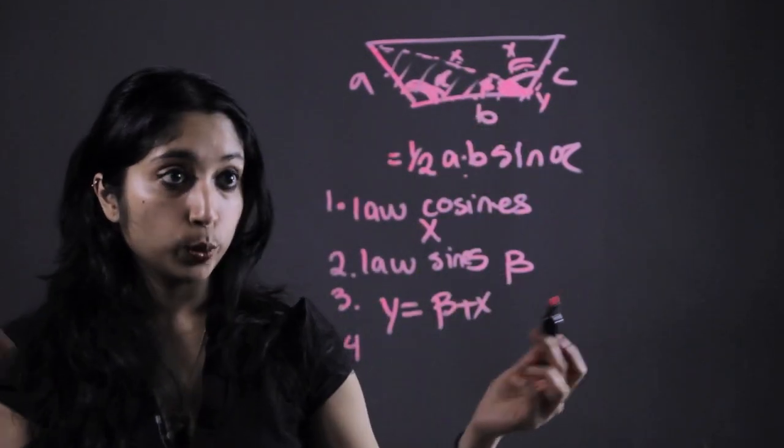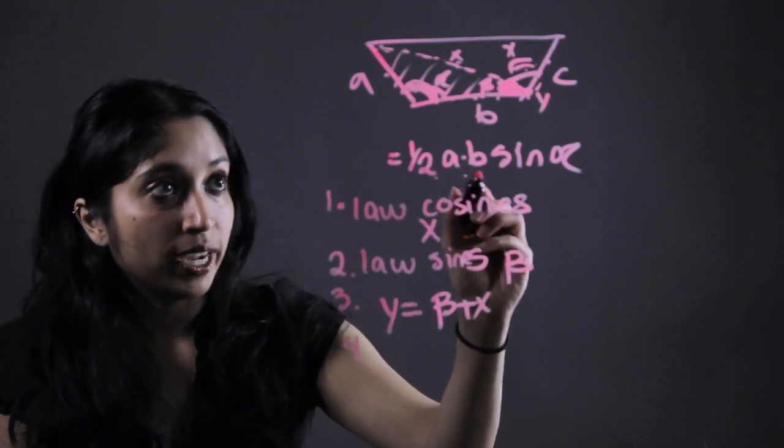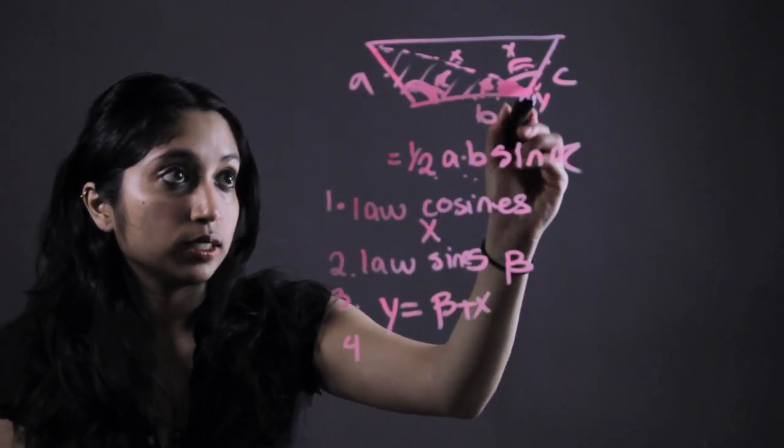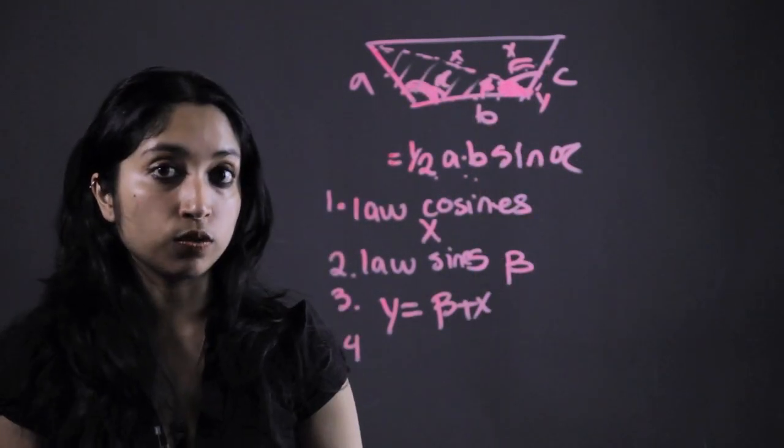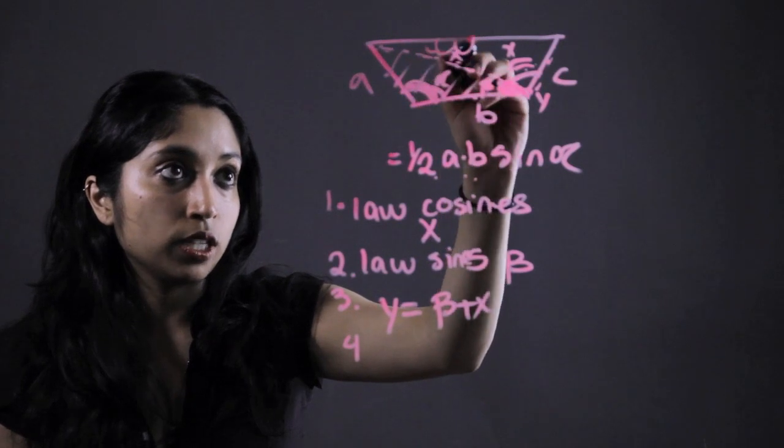And once we know that, we just use that original area formula I have, one half A times B, which would be X times this value we already know, times the sine of the angle we just solved for. That would give us the area of this triangle in here.